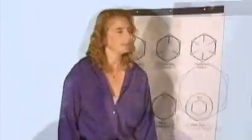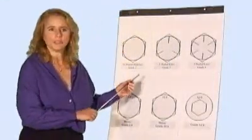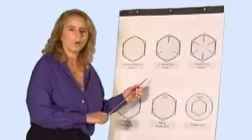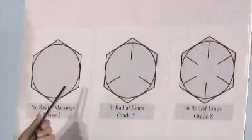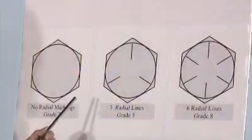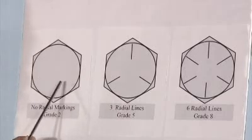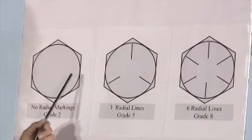So let's go through the first thing you're going to need to know, which is the grade markings on the bolt. When you're looking at a grade 2, you're looking at a low carbon bolt, usually has no markings on the head, maybe except for just a little manufacturer's mark. It could also read A307 on the top of the head.